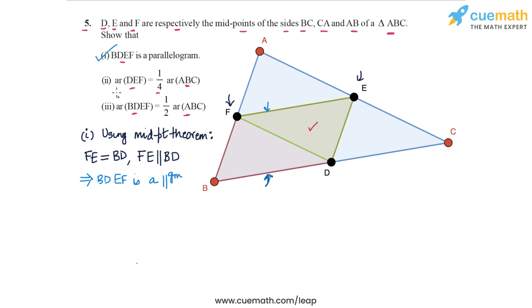Now in part two, we have to prove that the area of triangle DEF — the area of this green triangle — is one-fourth the area of the whole triangle ABC. To prove this, we will make use of the fact that the diagonal of a parallelogram divides it into two congruent triangles. In part one, we proved that BDEF is a parallelogram, so its diagonal FD divides it into two congruent triangles.